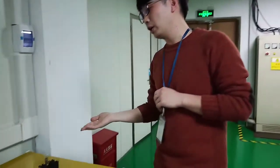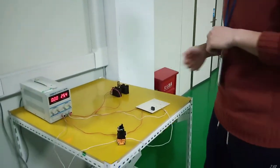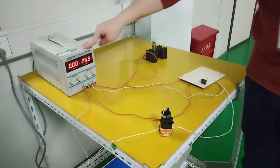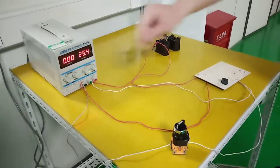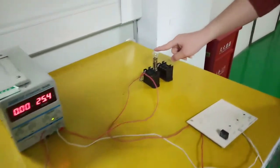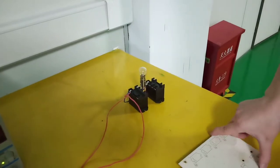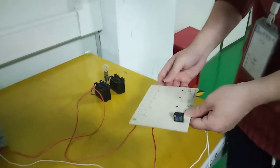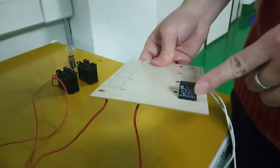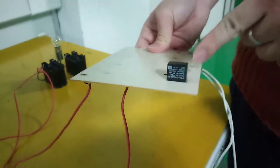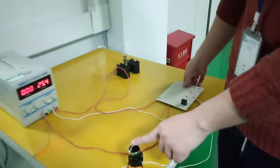Now let's have a look at the equipment we are going to use today. This is a DC power supply and this is a little bulb. This is a PC board which we have already welded a relay on, and this is a switch.